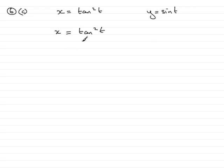So what is tan²t? Well, tan²t is (tan t)², and tan t is sin t over cos t. So that's (sin t / cos t)², and if I square this out, I get sin²t over cos²t.